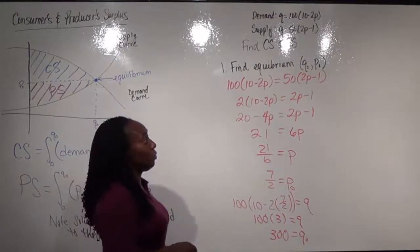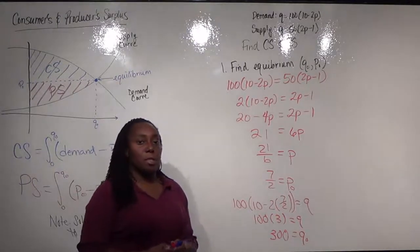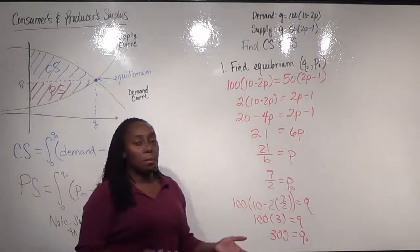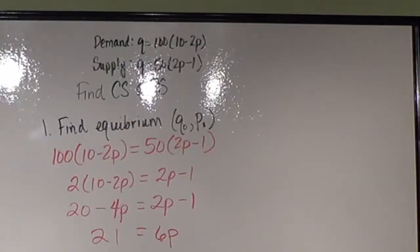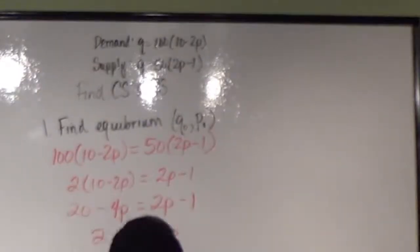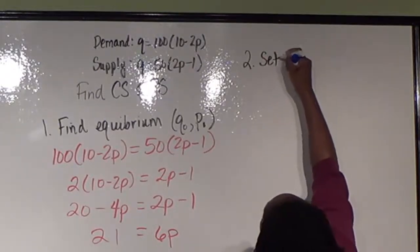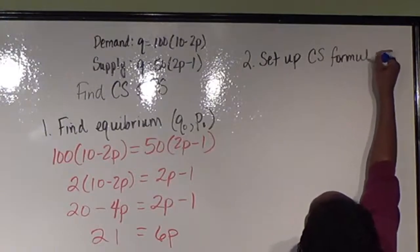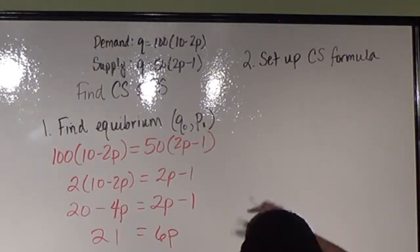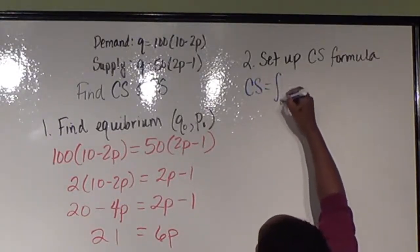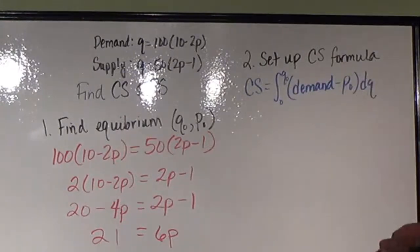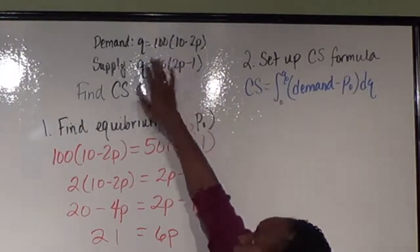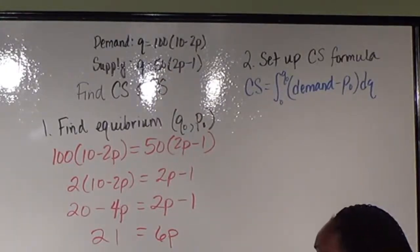Now that I have my equilibrium, I can go ahead and solve for the consumer's and producer's surplus. We're going to do the consumer surplus first. Remember, our consumer surplus is the integral from 0 to q-naught of our demand minus our equilibrium price, with respect to q. Our demand equation is in terms of p, so we need to rewrite it in terms of q. Dividing by 100 gives q/100 = 10 − 2p, then subtracting 10 and dividing by negative 2 gives p = 5 − q/200.